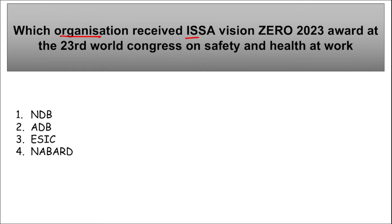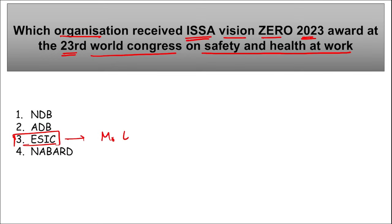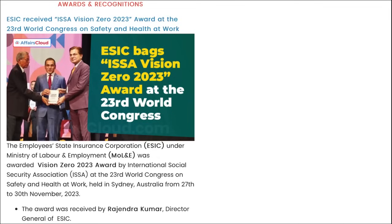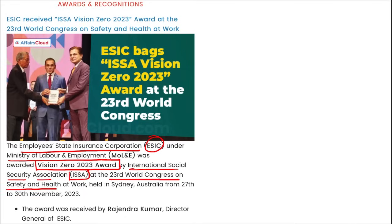किस organization ने receive किया ISSA Vision Zero 2023 award at the 23rd World Congress on Safety and Health at Work? तो याद रखेंगे — ESIC, यानी Employee State Insurance Corporation — इनको यहाँ पर Vision Zero 2023 award से सम्मानित किया गया by ISSA, जो कि है International Social Security Association। यह Ministry of Labour and Employment के अंदर आती है।